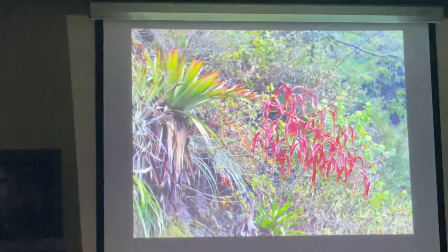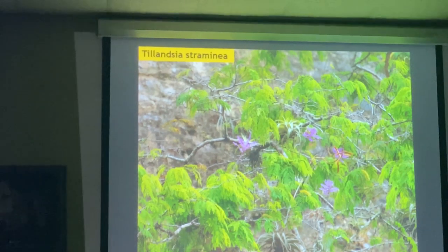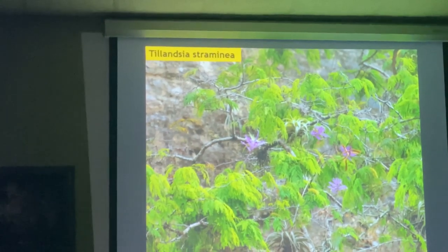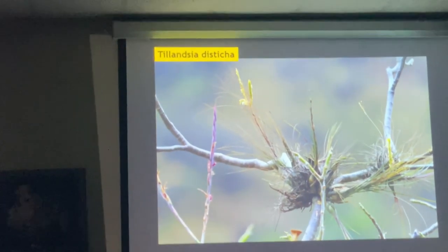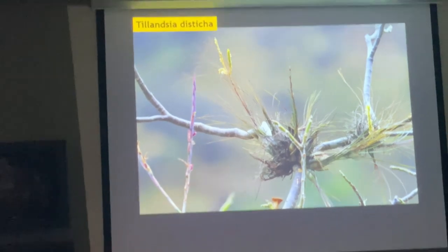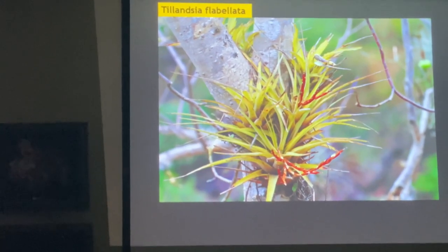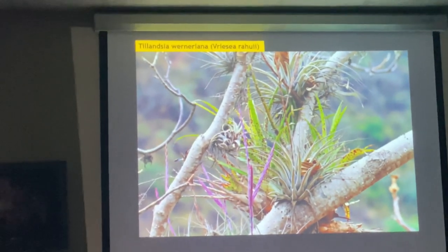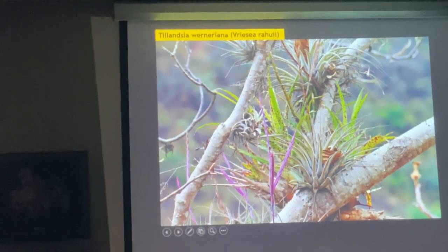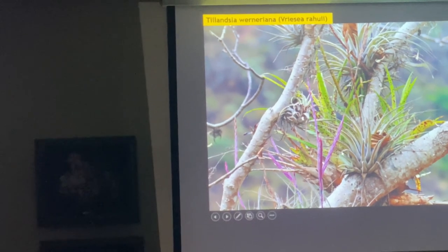More Tillandsia carnosa. Tillandsia straminea is widespread; in some cases it grows in dry areas, though here it was fairly humid. Tillandsia disticha — different forms of it. What you see on the left is Tillandsia rauhii, which has been changed — now called Tillandsia flabellata. These are all growing in exactly the same area, almost on the same tree.